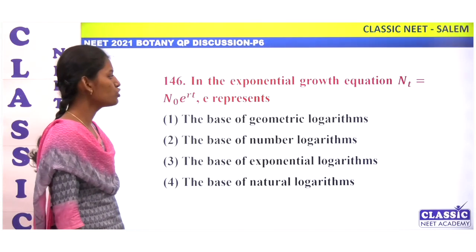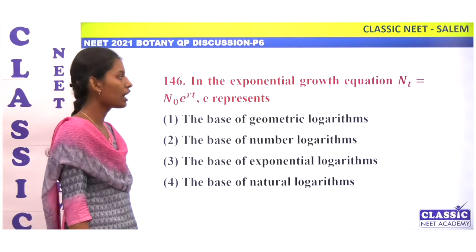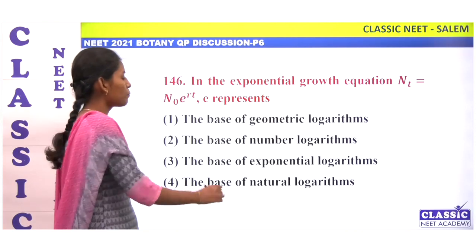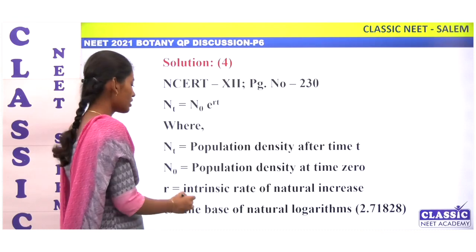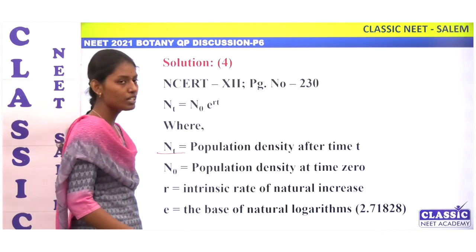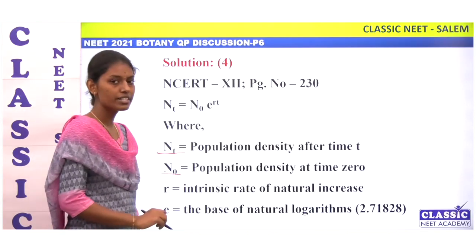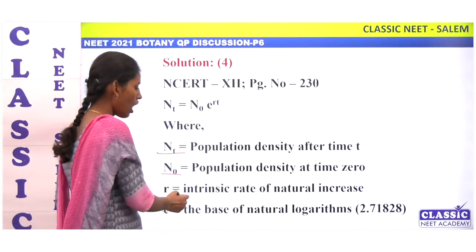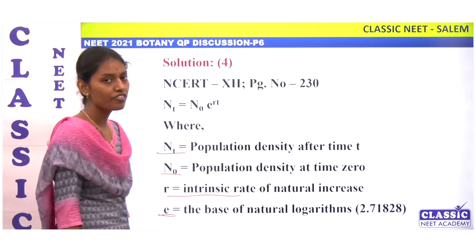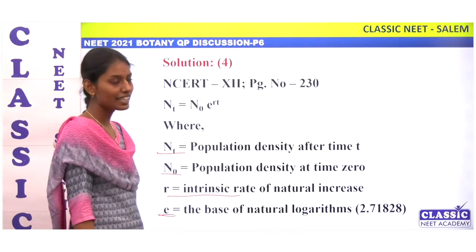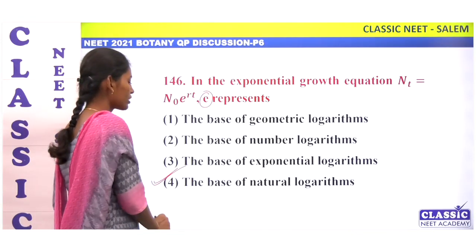In the exponential growth equation Nt equals N0 times e to the power rt, what does e represent? Nt is population density after time t; N0 is population density at time 0; r is intrinsic rate of natural increase; e is the base of natural logarithm. Option 4.